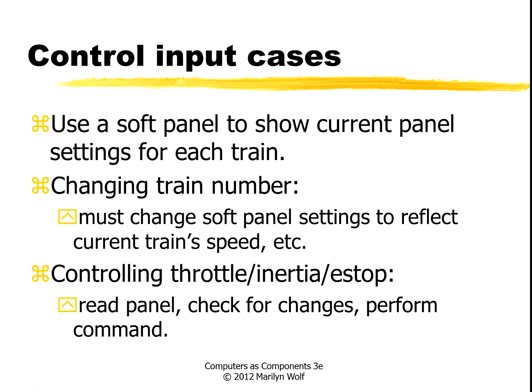When the user changes the train number, the soft panel's display has to be updated to reflect what train is being activated. When the user uses the panels, they will set the train number and then set the speed, set the inertia and so forth. So if we get one of those other messages, then we're going to figure out what changed and then actually send a message to do it.